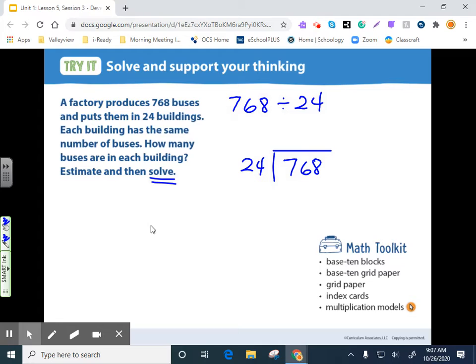And again, we talked about this being a dividend, the 768, 24 being the divisor, and our answer will be the quotient. So let's set this up. Here's where I want to focus on something like that. So we've got a 24. We know 24 does not go into 7, so we can just put an X over that. And we know 24 is going to have to go into 76.